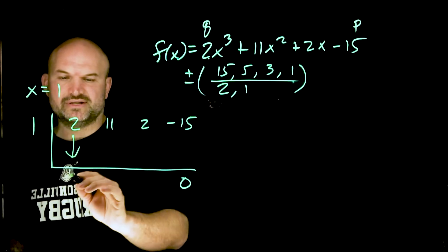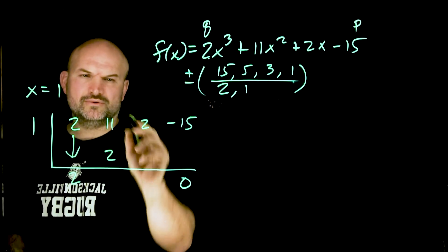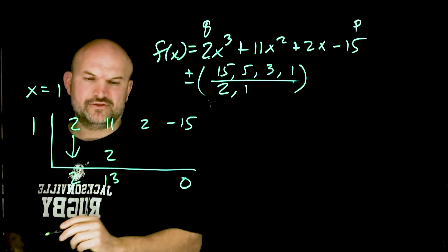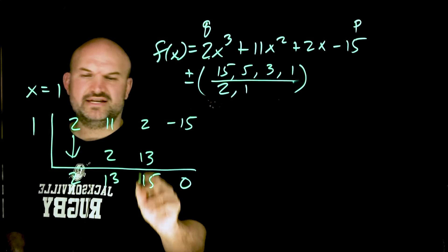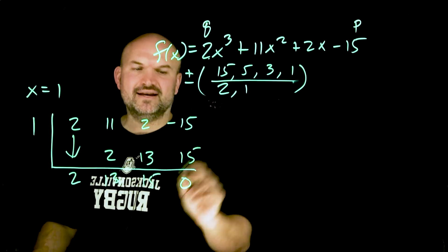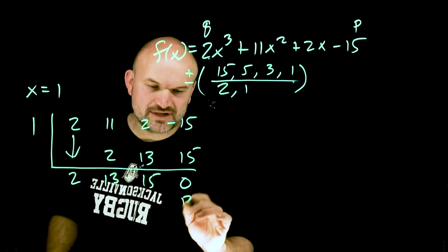Let's go through the synthetic division algorithm. The first one you always bring down, that's your freebie. You multiply on the diagonal, add on the vertical. 2 times 1 is 2, 11 plus 2 is 13, 13 times 1 is 13, 2 plus 13 is 15, 15 times 1 is 15. And guess what ladies and gentlemen? Boom, we have a remainder of 0.